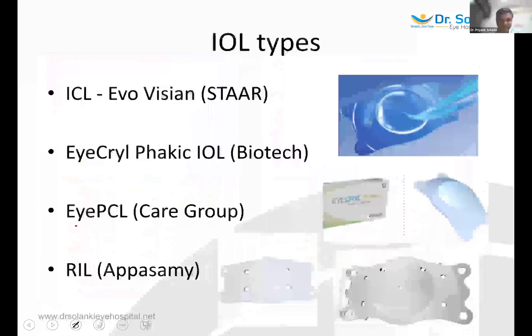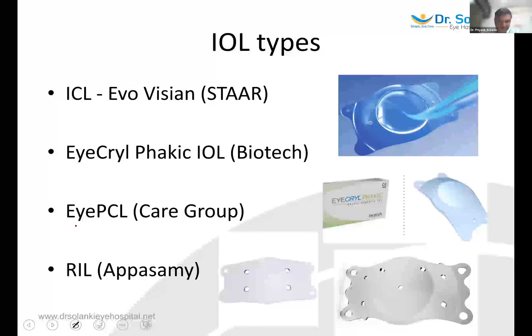Four basic types of phakic IOLs are available in the subcontinent: the STAAR ICL, Biotech (iCRYL), Care group (ipcl), and Appasamy RL. The speaker has personal experience with the first three. All three — STAAR, Biotech, and Care group — perform well with good stability and outcomes in keratoconus and post-C3R cases.